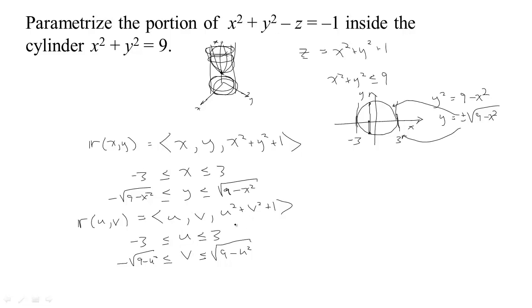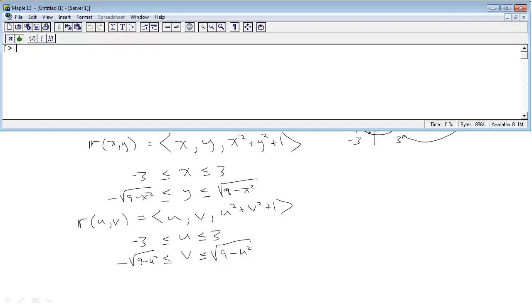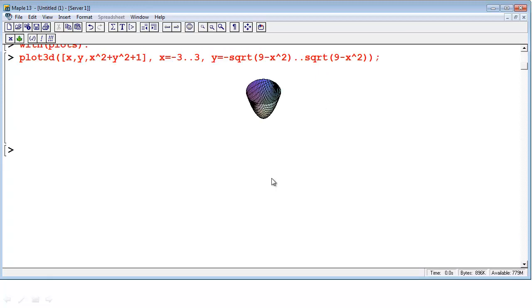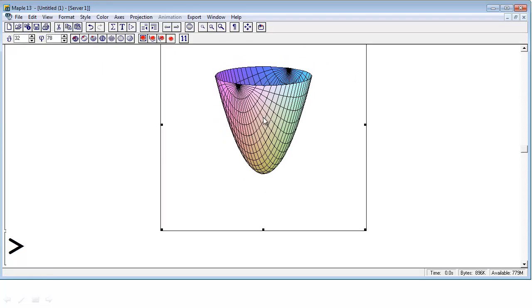We could use Maple to graph this parameterization. First we need to load the plotting package, so we'll load plots. Then we can use plot 3D. To plot a parametric surface, you put the three equations in square brackets. Our three equations were x and y and x squared plus y squared plus 1. That's our x, y and z values. We have x from negative 3 to 3 and y from negative square root of 9 minus x squared to the square root of 9 minus x squared. If we blow this up a little bit, there's our elliptic paraboloid.